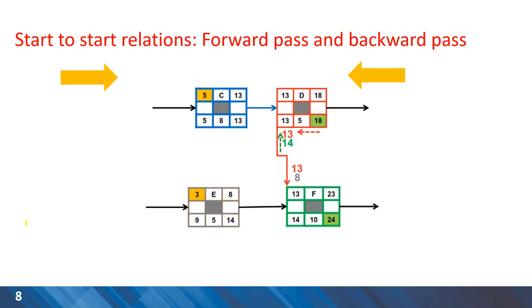Here is an example of how the calculations in forward pass and backward pass are done in networks containing a start-to-start relationship. As an example, you can see that for activity F, we have two options for early start. Eight can be transferred from E as the first option for early start of activity F, and the 13 from activity B can be transferred in the forward pass as the early start time for activity F. Because we are in the forward pass, the longest date or 13 is accepted. And then the duration of 10 is added and 23 will be the early finish time for activity F. Please go through the calculations for backward pass as well.